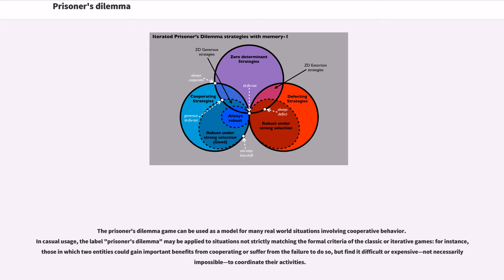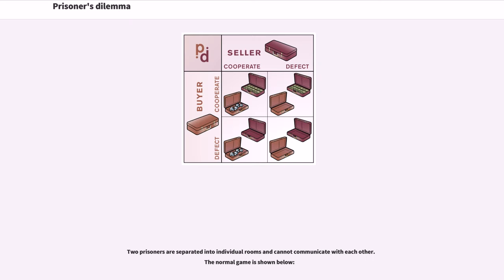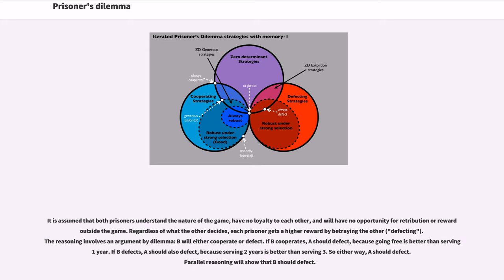In casual usage, the label Prisoner's Dilemma may be applied to situations not strictly matching the formal criteria of the classic or iterative games — for instance, those in which two entities could gain important benefits from cooperating or suffer from the failure to do so, but find it difficult or expensive, not necessarily impossible, to coordinate their activities. These two prisoners are separated into individual rooms and cannot communicate with each other. It is assumed that both prisoners understand the nature of the game, have no loyalty to each other, and will have no opportunity for retribution or reward outside the game.